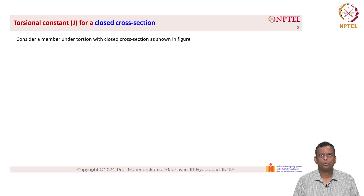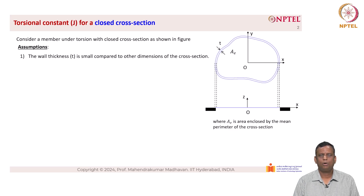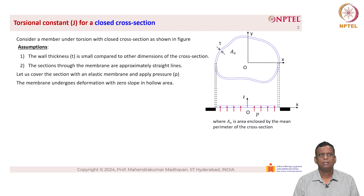Consider a membrane under torsion with a closed cross section as shown in the figure. The assumptions are: the wall thickness t is small compared to the other dimensions of the cross section. Here, a_e is the area enclosed by the mean perimeter of the cross section, which is not the cross-sectional area but the area enclosed by the cross section. The sections through the membrane are approximately straight lines, meaning there is no variation in the thickness direction. The membrane is covered with an elastic membrane and pressure p is applied. S is the surface tension, also known as force per unit length.